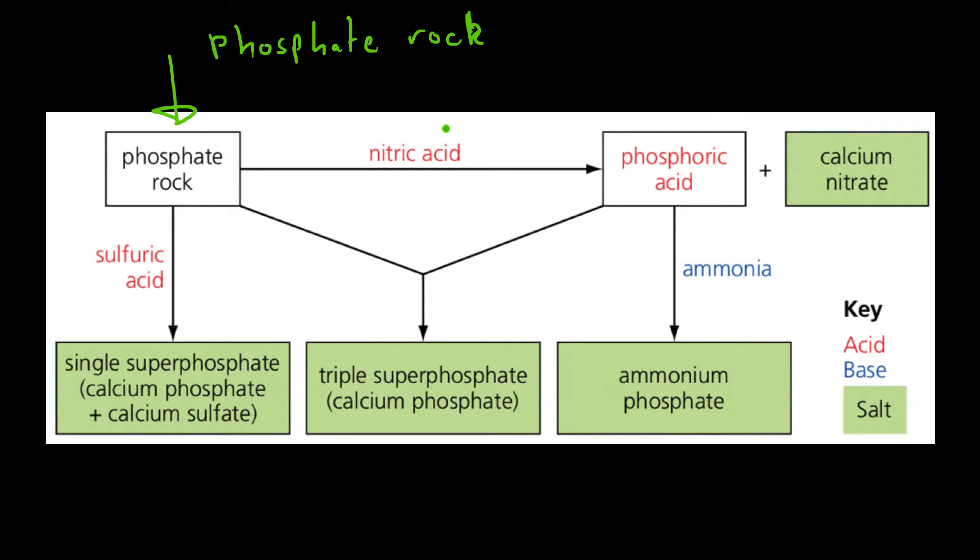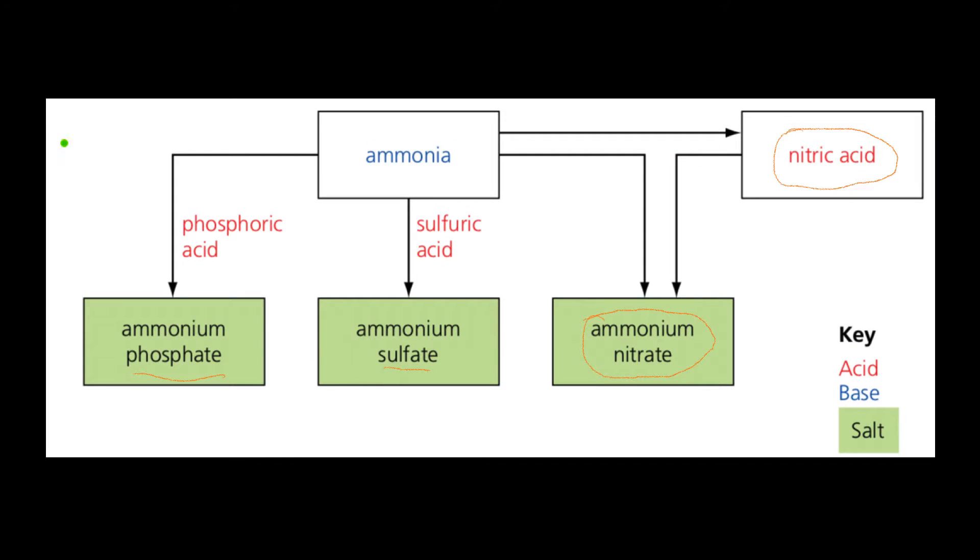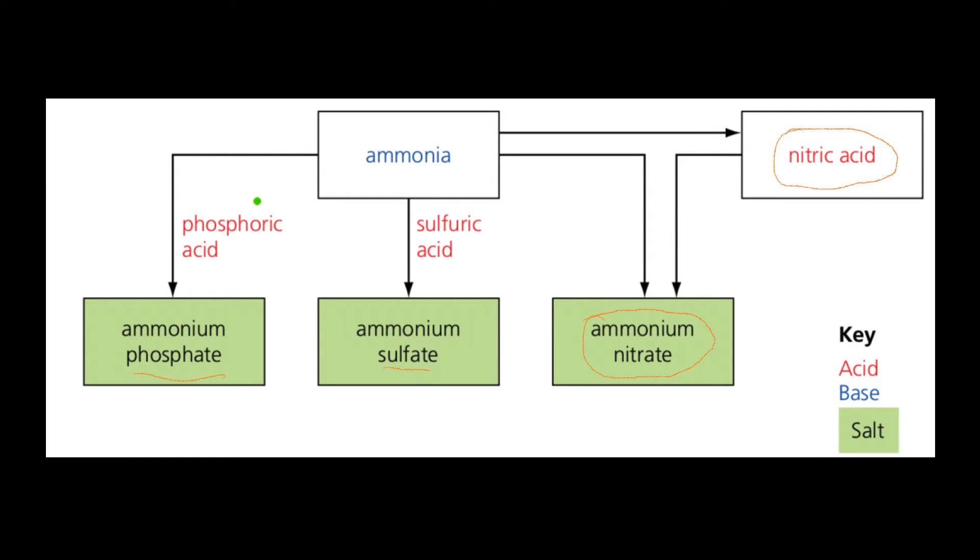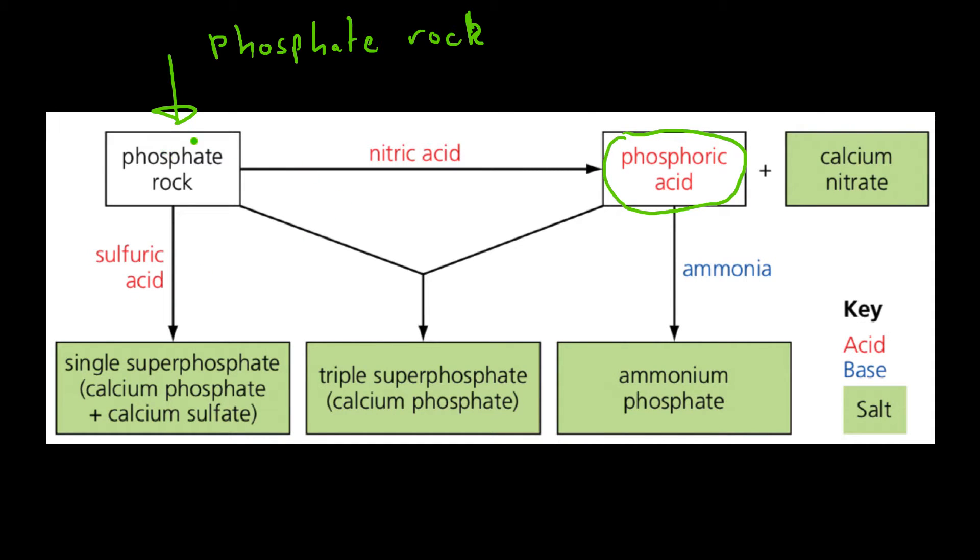So, phosphate rock plus nitric acid, and bear in mind we found out how to produce nitric acid from ammonia in the previous example. If you add that nitric acid to phosphate rock, you get phosphoric acid. Funnily enough, phosphoric acid is one of the reagents here. So you see that this could actually be even more complicated than this diagram makes out. But phosphate rock plus nitric acid makes phosphoric acid. Then phosphoric acid is used with other things. However, that reaction also produces calcium nitrate. Calcium nitrate is one of our minerals that we want, one of our salts that we want, so that's good.